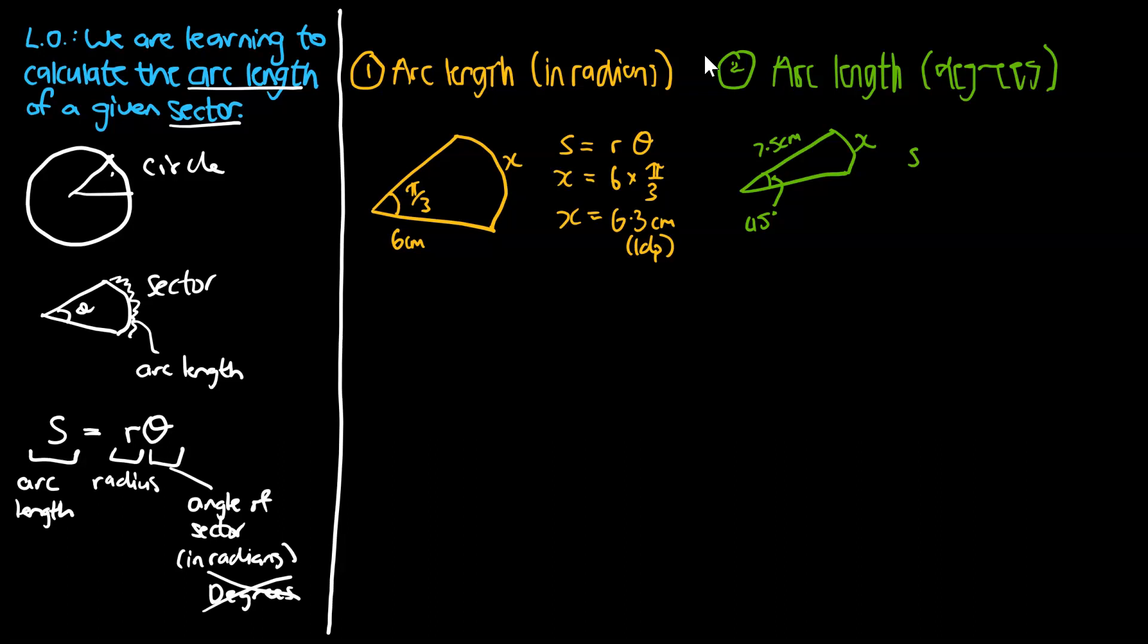Same formula. S is going to be equal to r times angle. That's going to be x is equal to 7.5 times. But in this case here, we've got a bit of a problem. We don't have the angle in radians. We have the angle in degrees. So we're going to need to convert that. That's going to be 45 times pi over 180. And when you simplify all that, you should get pi over 4. So we then put that in. Pi over 4. And when we get that, our arc length will be equal to 5.9 centimeters. And I rounded that to one decimal point.